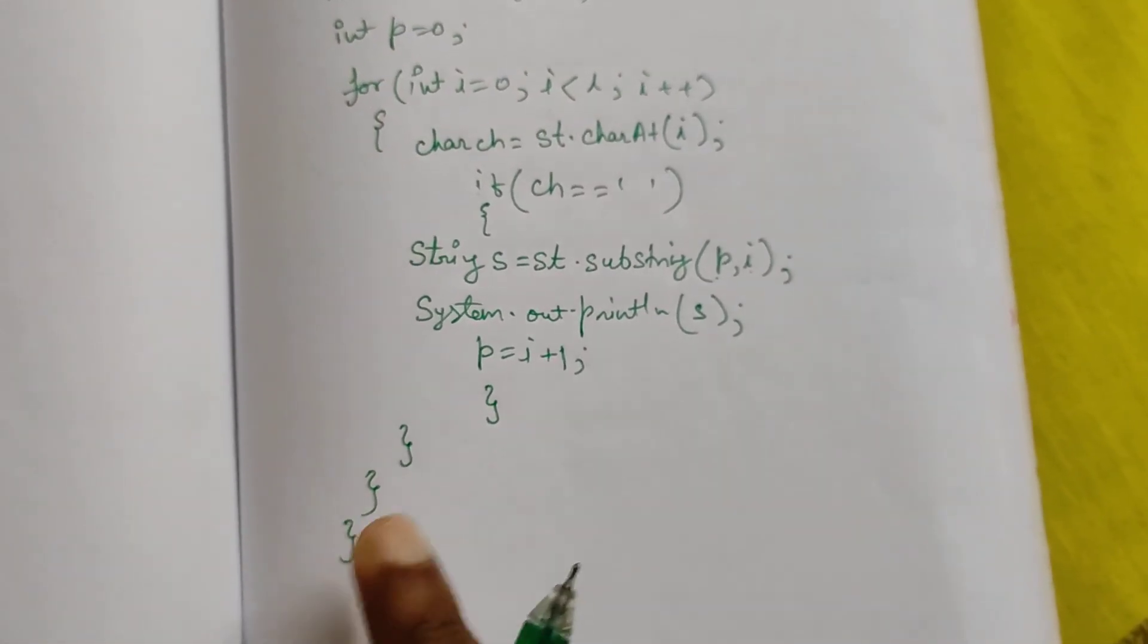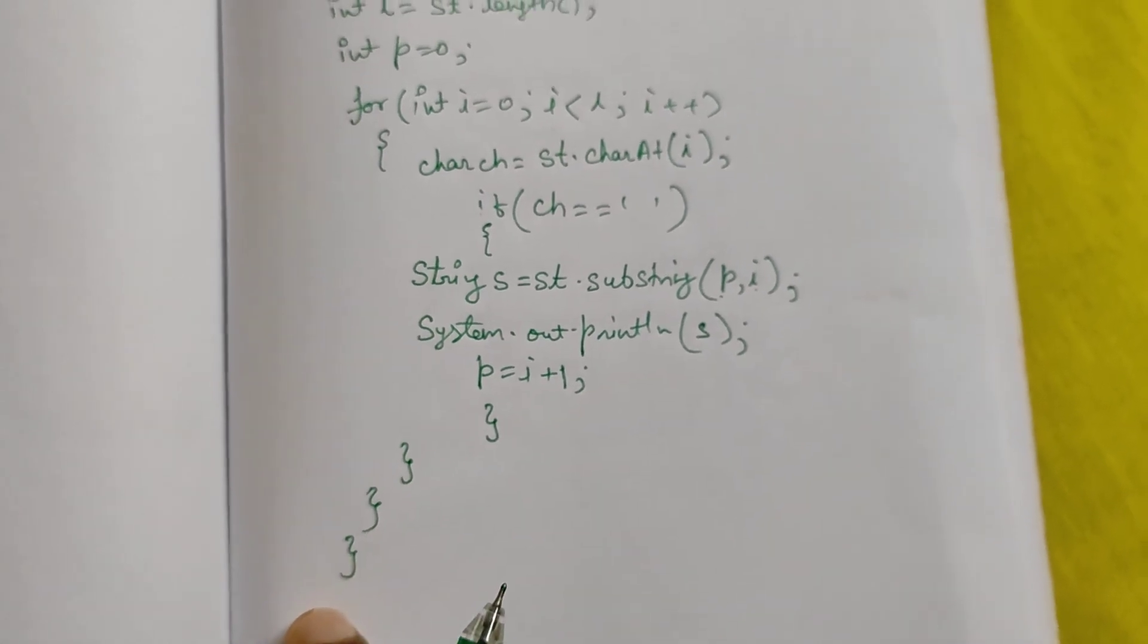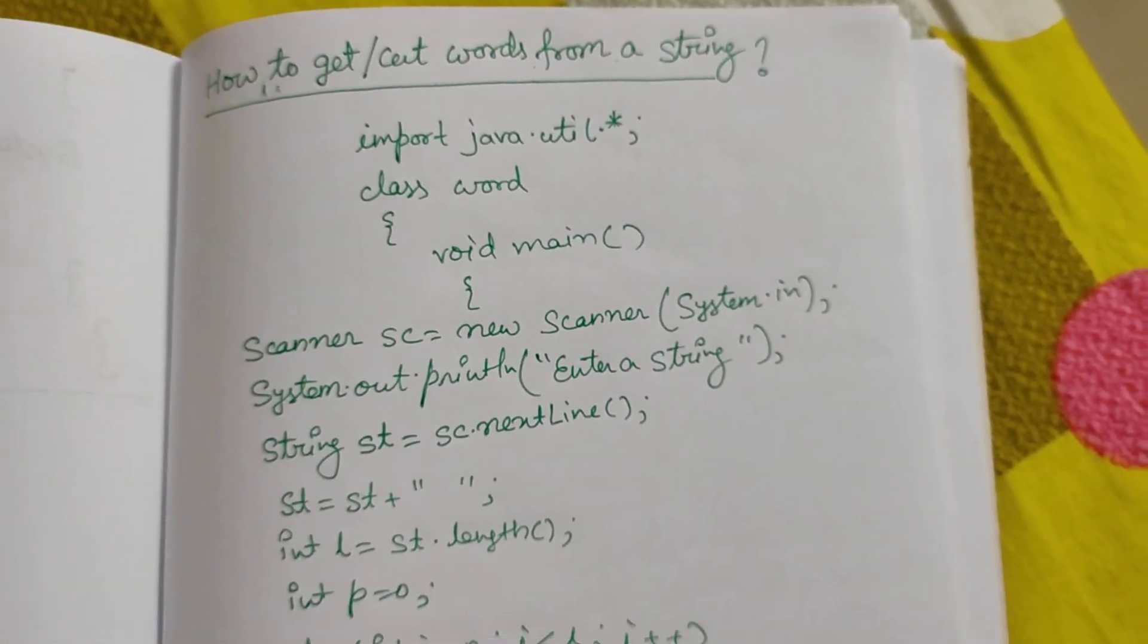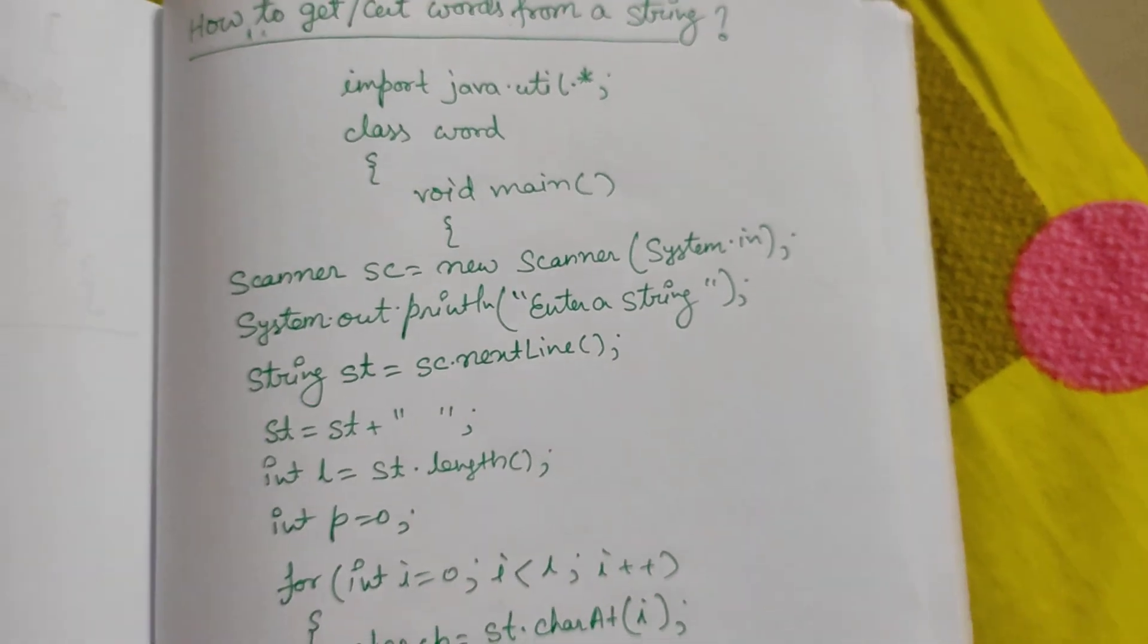Close the class and void main and class. So that is our simple program to cut or print the words one after another.